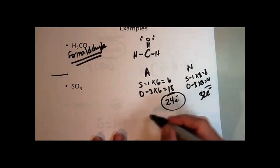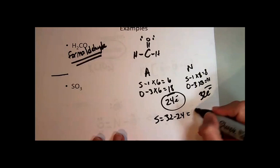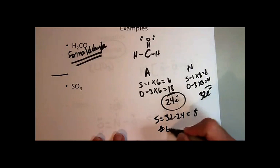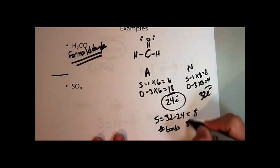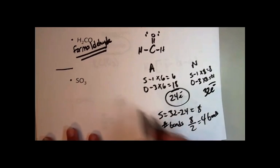So the S equals N minus A rule. We're going to predict that thirty-two minus twenty-four equals eight. So the number of bonds then we're going to predict is eight divided by two, four bonds. Okay, so now let's get started.